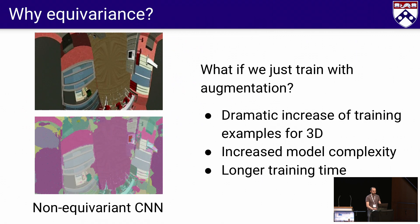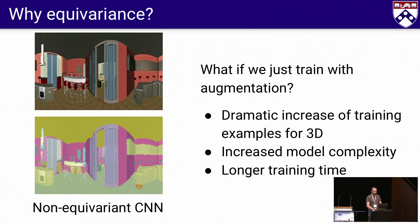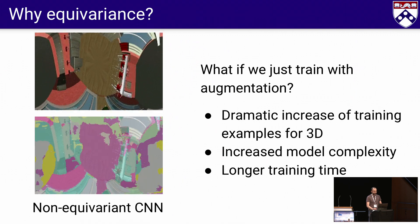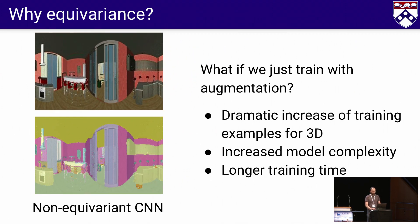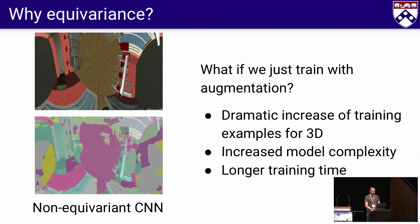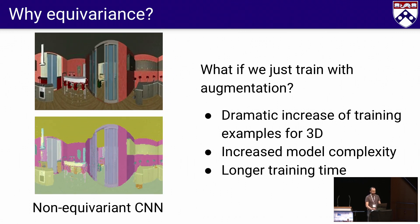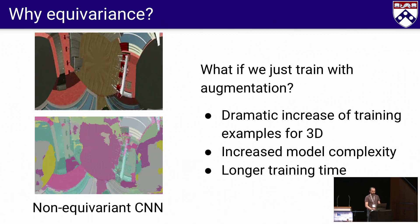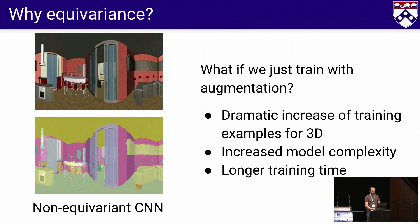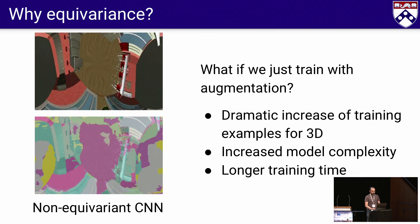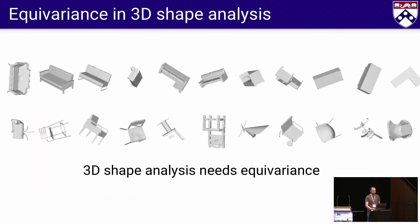Why does Equivariance matter? This is what happens when we train a non-SO3 equivariant CNN without seeing all orientations during training. We could try to improve using data augmentation, but since the space of possible 3D rotations is very large, it will require a large number of training samples, meaning an increase in parameters and longer training time. Equivariant representations are a way to overcome these problems.